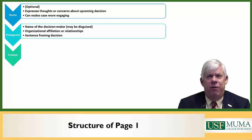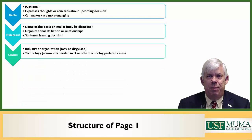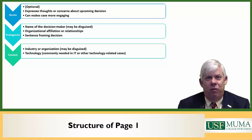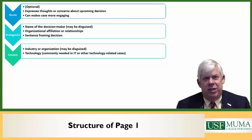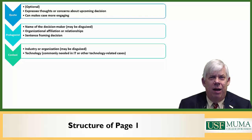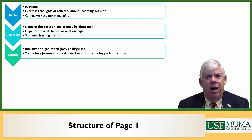The next thing we want to do is identify elements of context. There is at least one element of context we're almost always going to have to cover, and sometimes there's a second level. Specifically, we will normally need to say a few words about the industry or organization involved in the case — and again, this may be disguised for reasons of privacy or proprietary information. If you are doing a technology case, you may also want to say something about the technology that is going to be the focus of the context for the decision. On the first page we just want to give people a clear sense of what the context is.